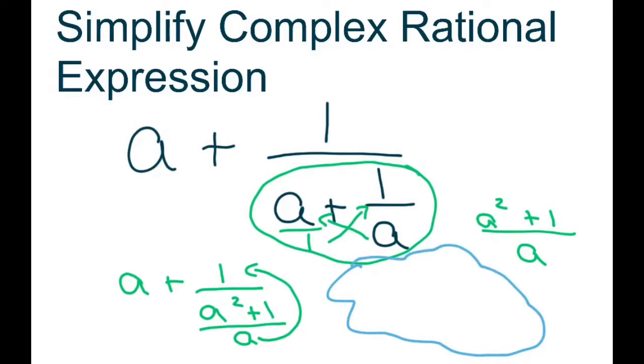1 divided by a squared plus 1 divided by a is the same as you keep, change, and flip. So when you multiply this across, you get a divided by a squared plus 1. So basically you just multiply those two.